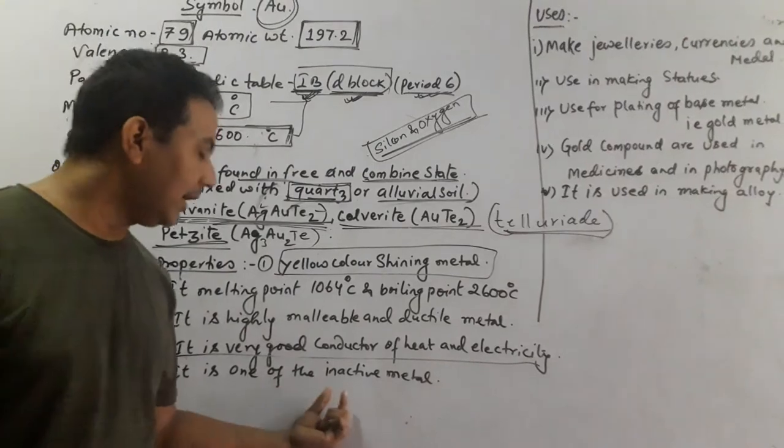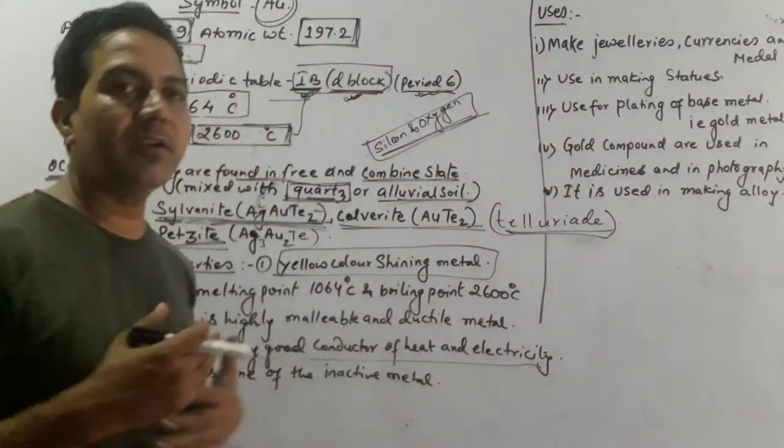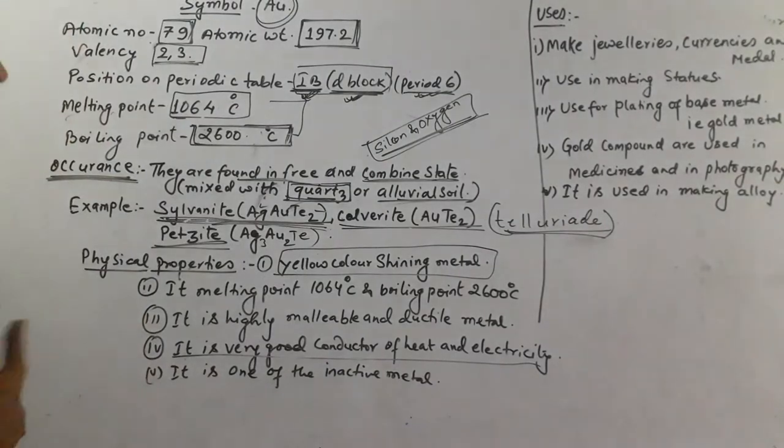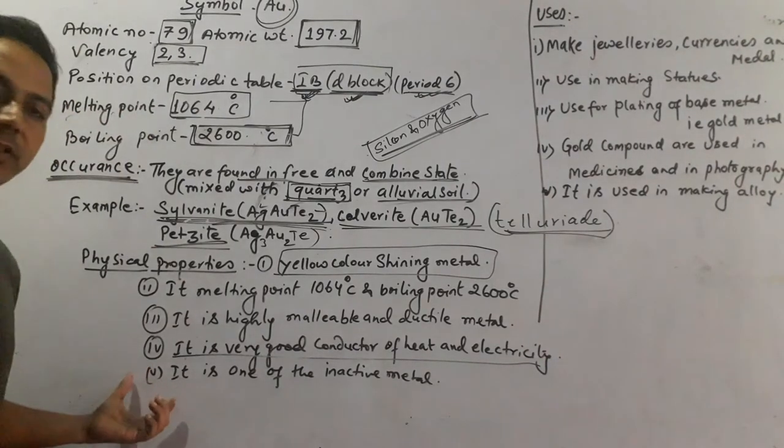It is one of the most inactive metals. Inactive metal means it does not dissolve in water or react in air easily. These are some of the physical properties of gold.